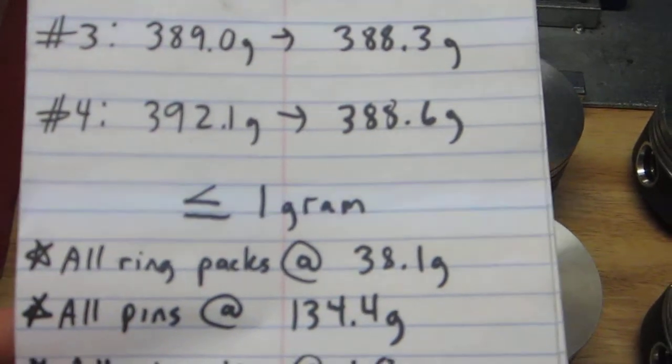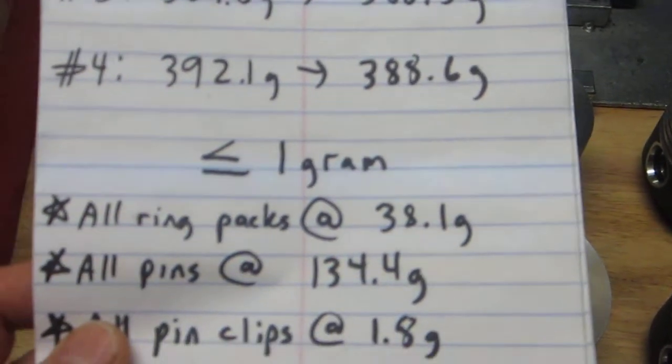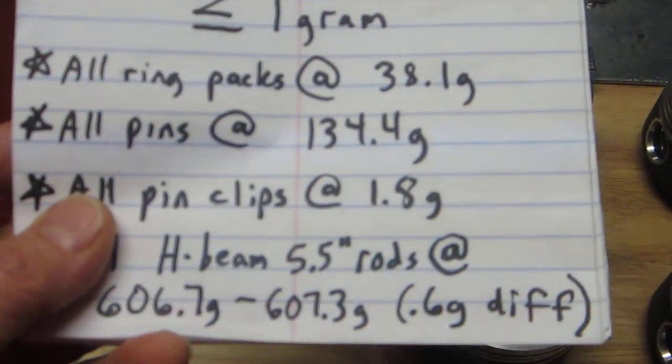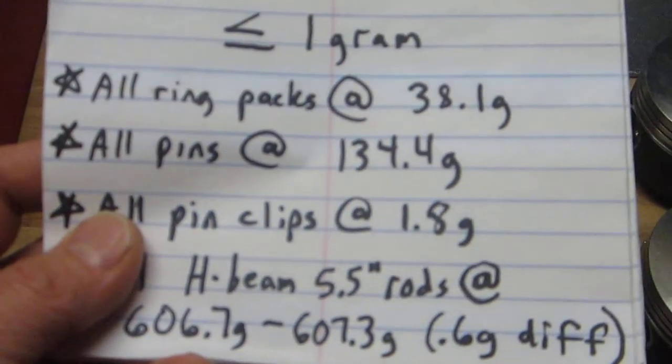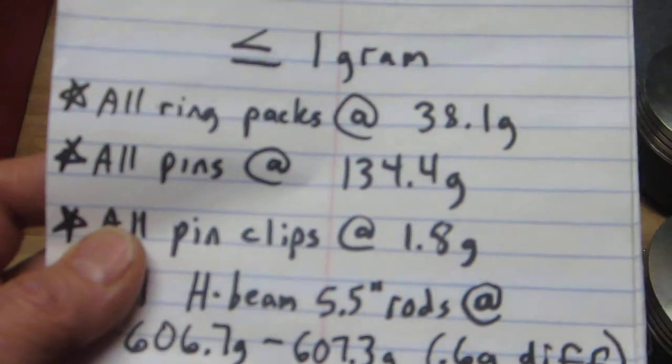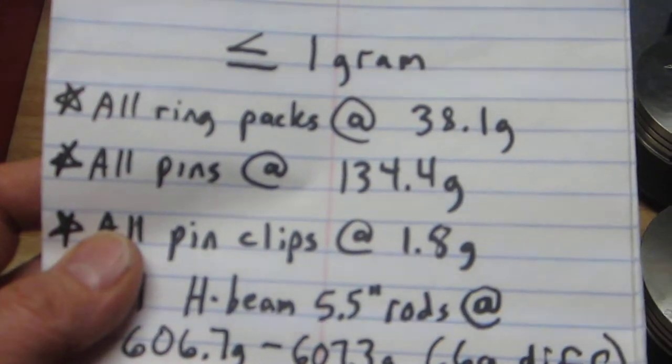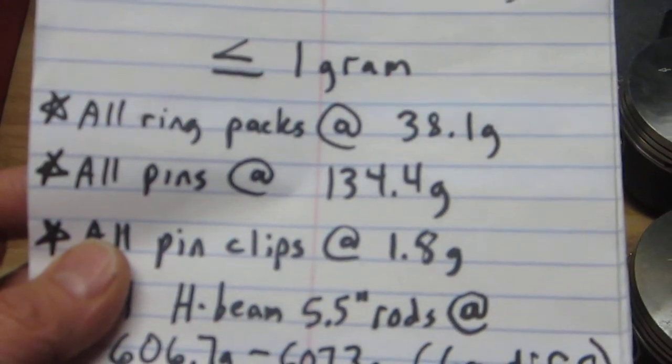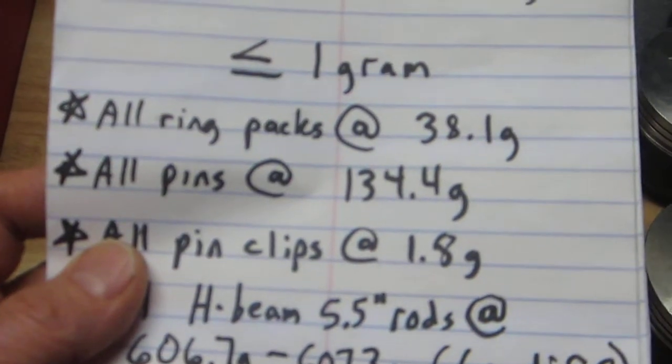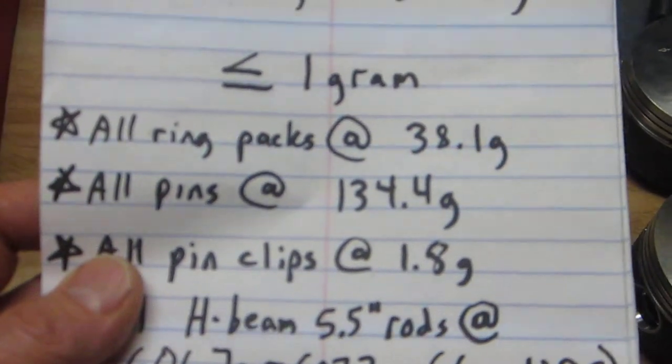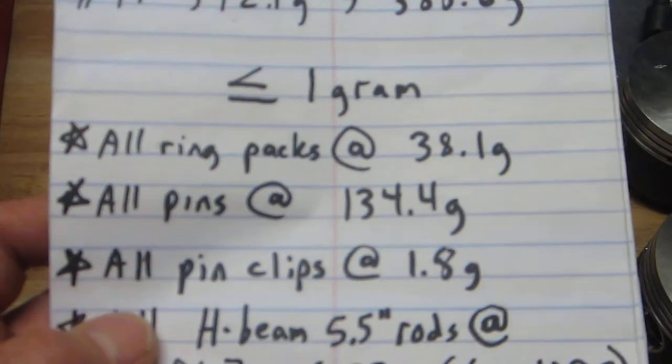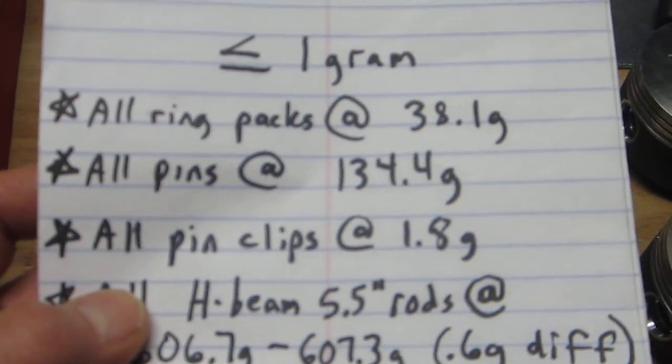I noticed that the ring packs all came in at 38.1 grams. The piston pins, there was just about no variance there. The piston pins were right around 134.4 grams. The little clips were all 1.8 grams for each pair of clips for each piston pin.